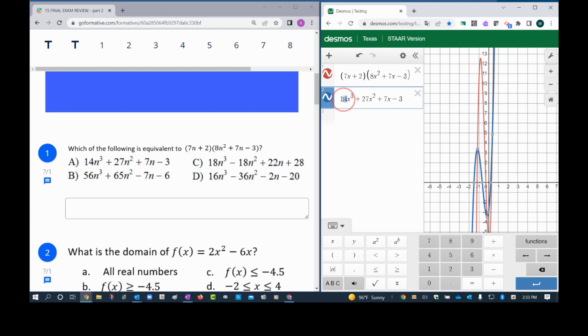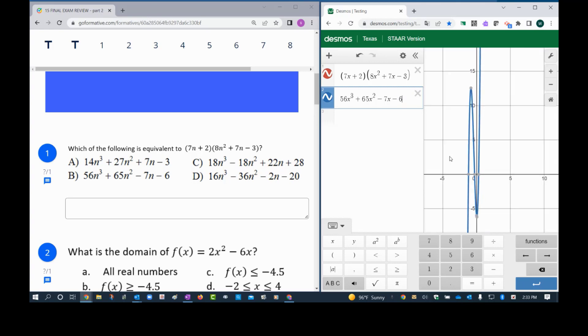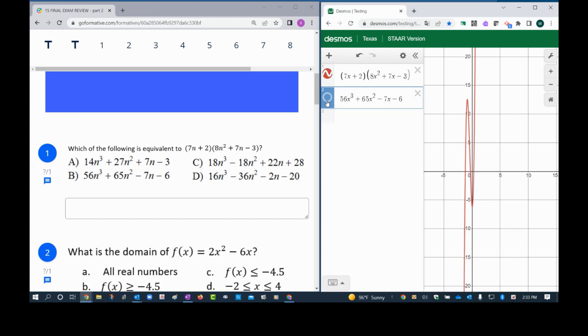So let's try to change that to 56, this to 65, this to negative 7, and this to negative 6. And look, at the second try we've got a match, so right there letter B is the answer.